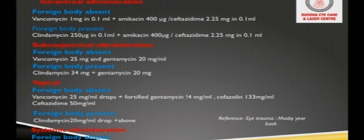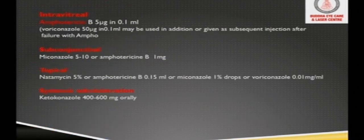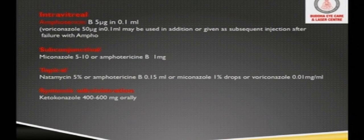Drug recommendations for traumatic endophthalmitis — for intravitreal administration — are broadly divided based on whether a foreign body is absent or present. If a foreign body is present, always go for clindamycin, or replace with vancomycin. For fungal endophthalmitis, intravitreal amphotericin has been used, along with subconjunctival miconazole, topical natamycin, and systemic administration of ketoconazole 400 mg orally.